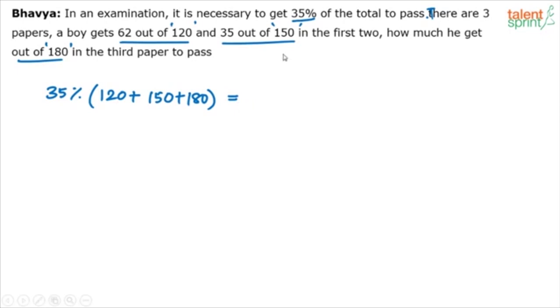Now, how many did he score? He has scored 62 in the first paper. He scored 35 in the second paper. How much should he score in the third paper? How much he has to get in the third paper out of 180? Let's say he has to get M marks in the third paper. To pass. Find out M. One equation, one variable. Can you not solve it? As simple as that.